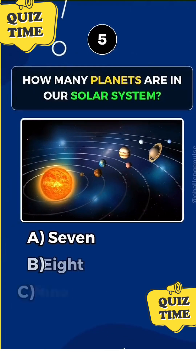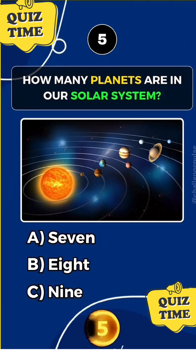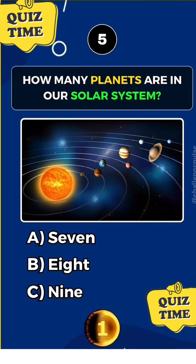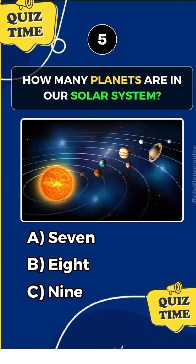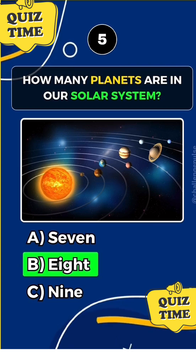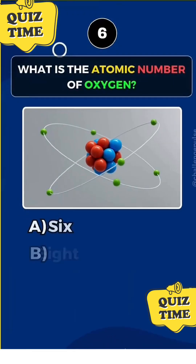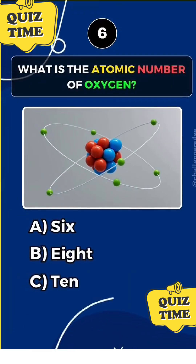How many planets are in our solar system? Answer B. Eight.